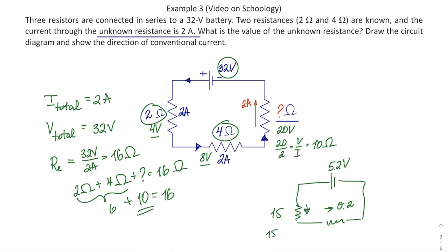Then, if this is 3V, then this guy will have 5.2 minus 3, which is 2.2V. Then, 2.2 over 0.2 would give you the resistance.